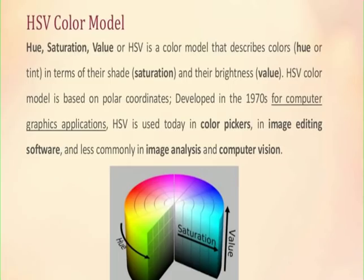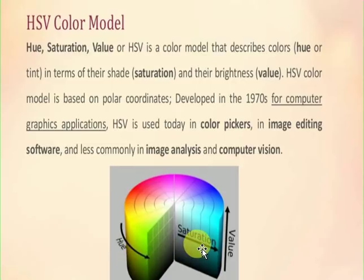Let us understand the HSV color model. HSV stands for hue, saturation and value, and describes colors in terms of their shade, saturation and brightness. The HSV color model is based on polar coordinates, developed in the 1970s for computer graphics applications. HSV is used today in color pickers in image editing software, and less commonly in image analysis and computer vision. The diagram shows that the combination of colors gives hue, we can saturate colors and increase or decrease the value of color.